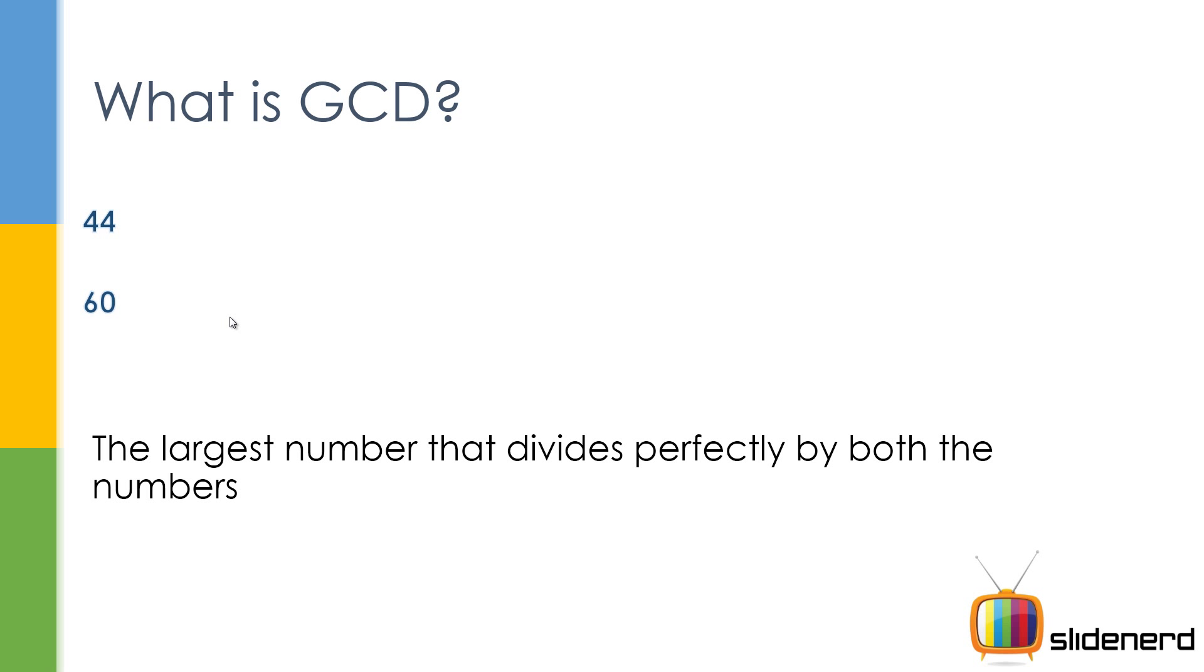So let's see, 44 and 60 are two numbers. So what I'm going to do is I'm going to try to find all those numbers that perfectly divide 44 and 60.